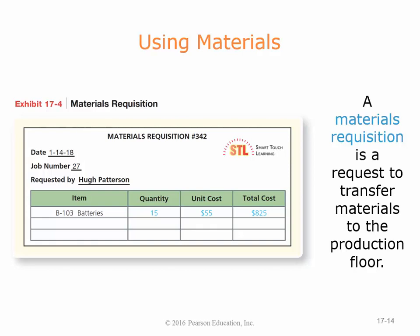Today the process is similar but digitized. Workers scan their name badge, scan the product, and scan the job barcode. The system records the transfer automatically. If you ever get a chance to tour an automobile manufacturing plant, it's insane how quickly they can roll a car down a production line and go from raw steel to a finished car.